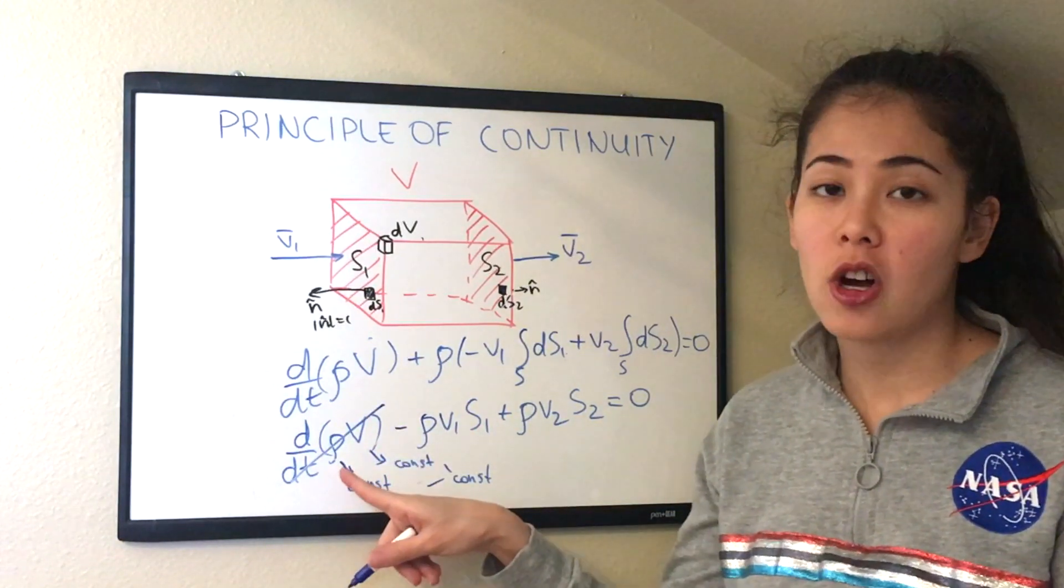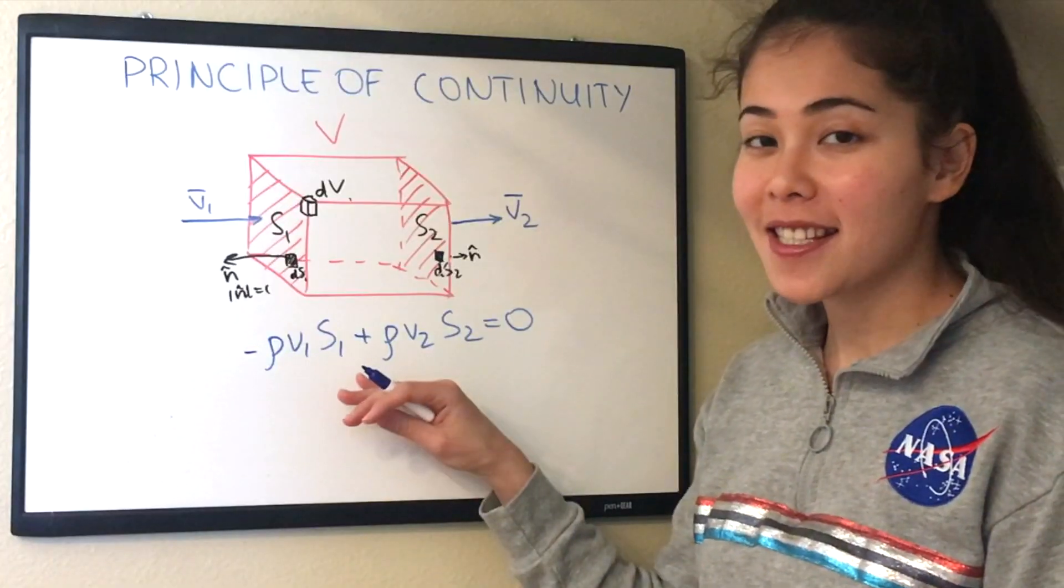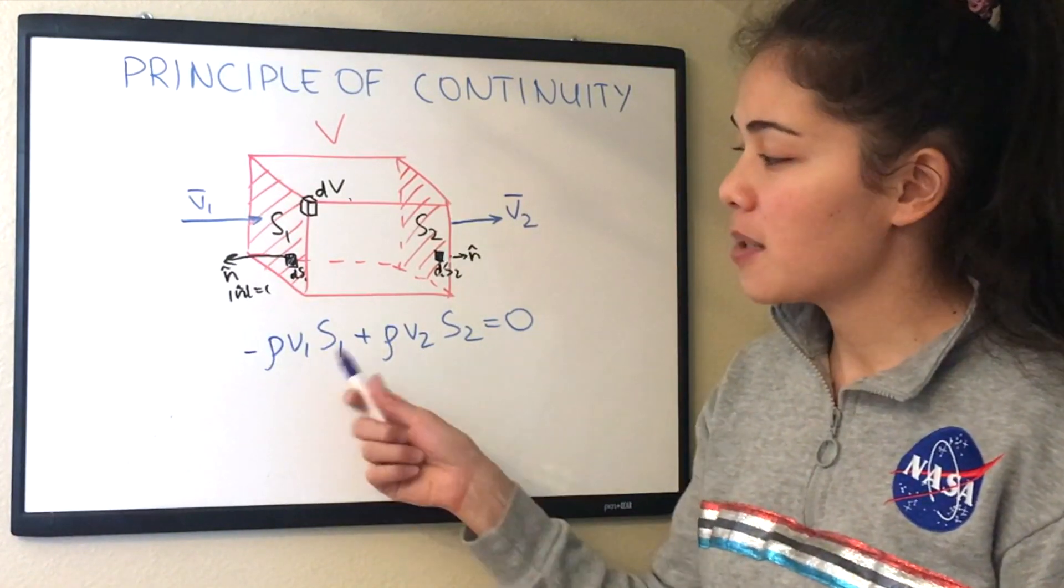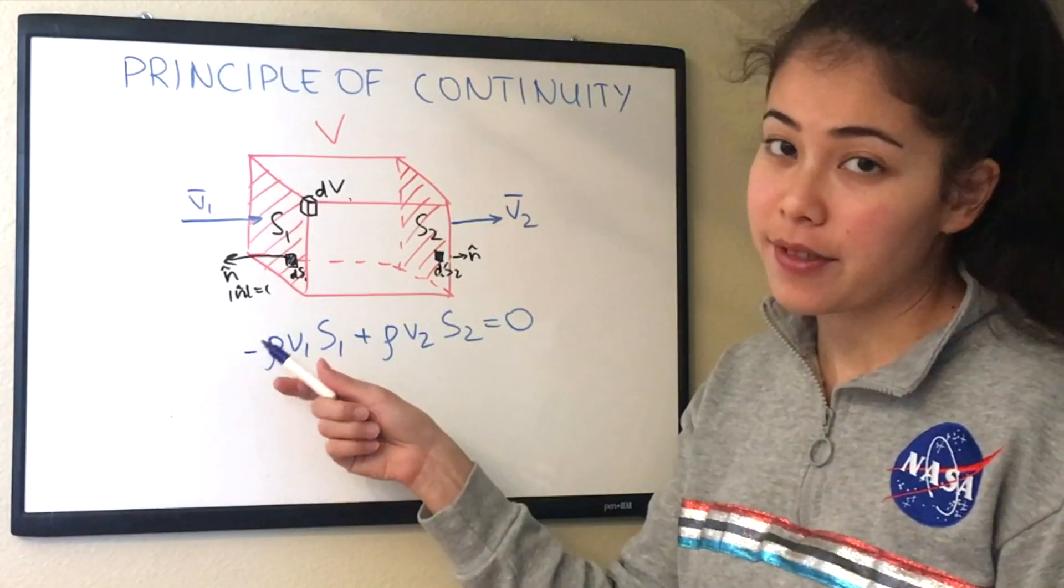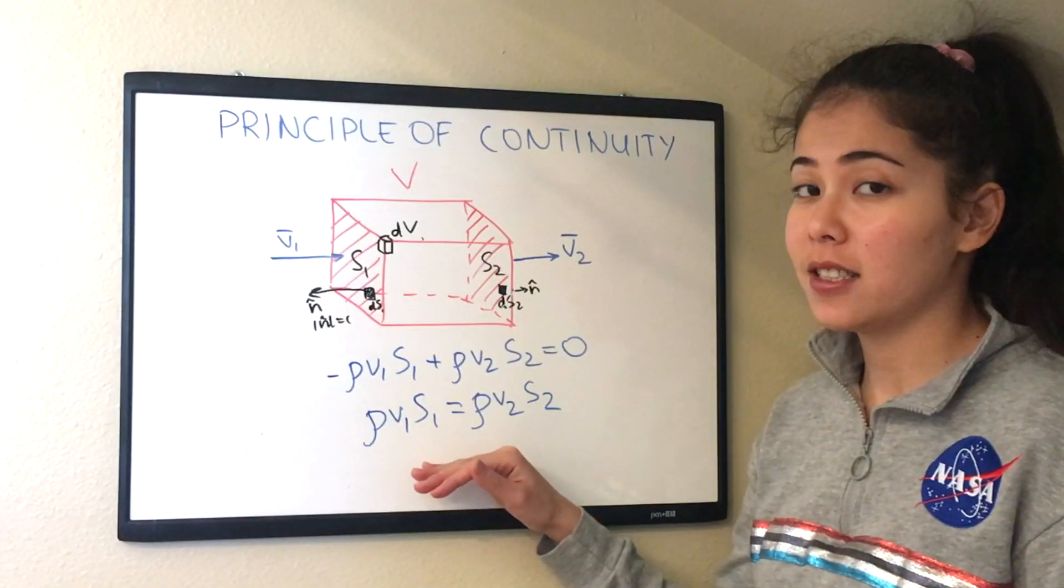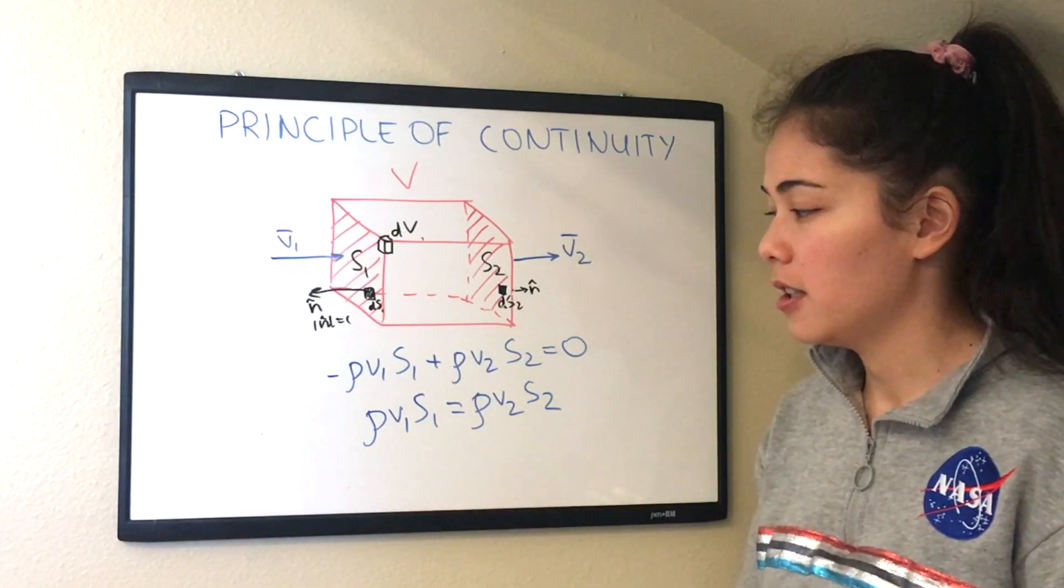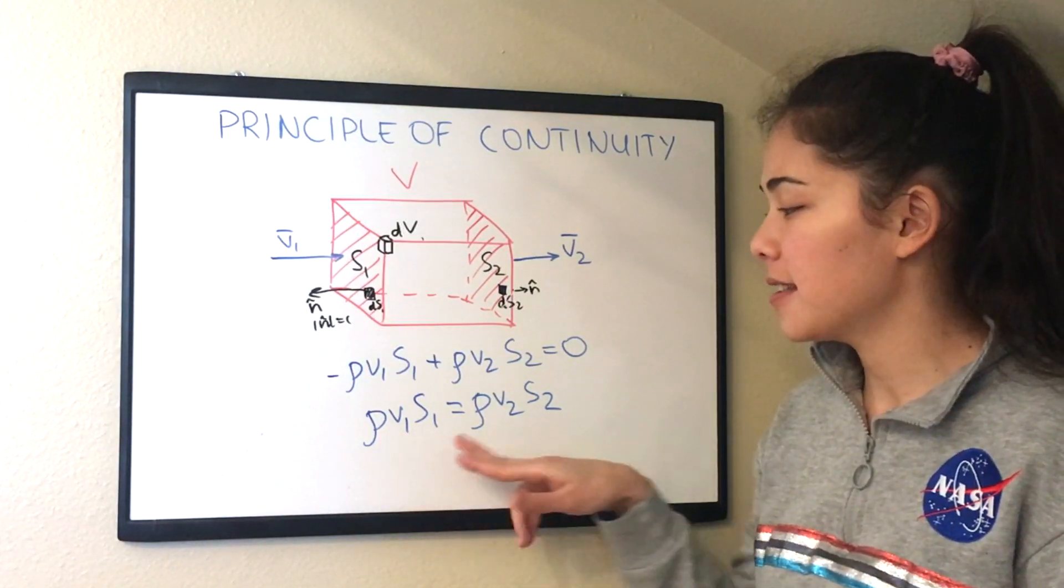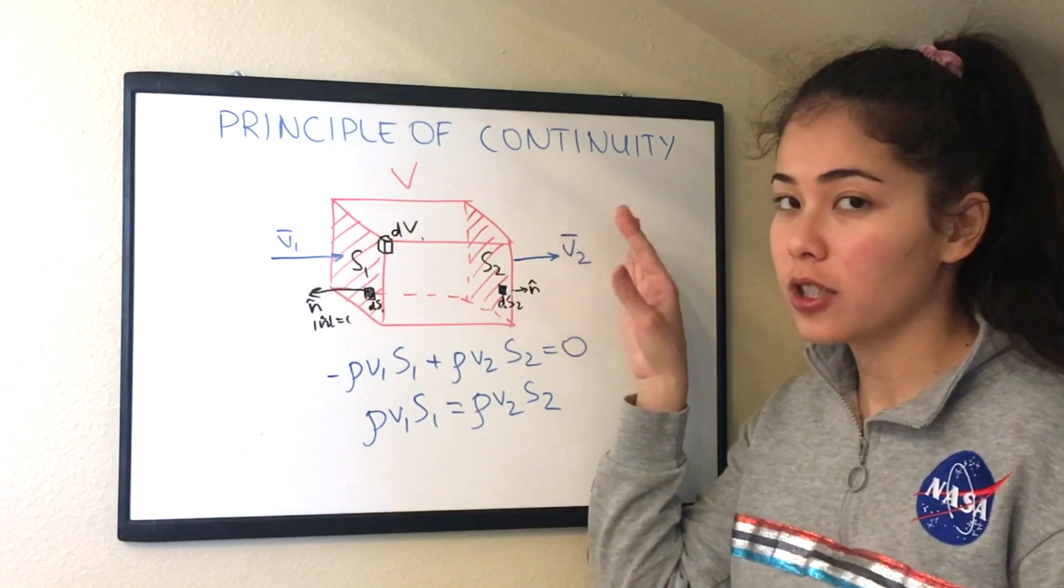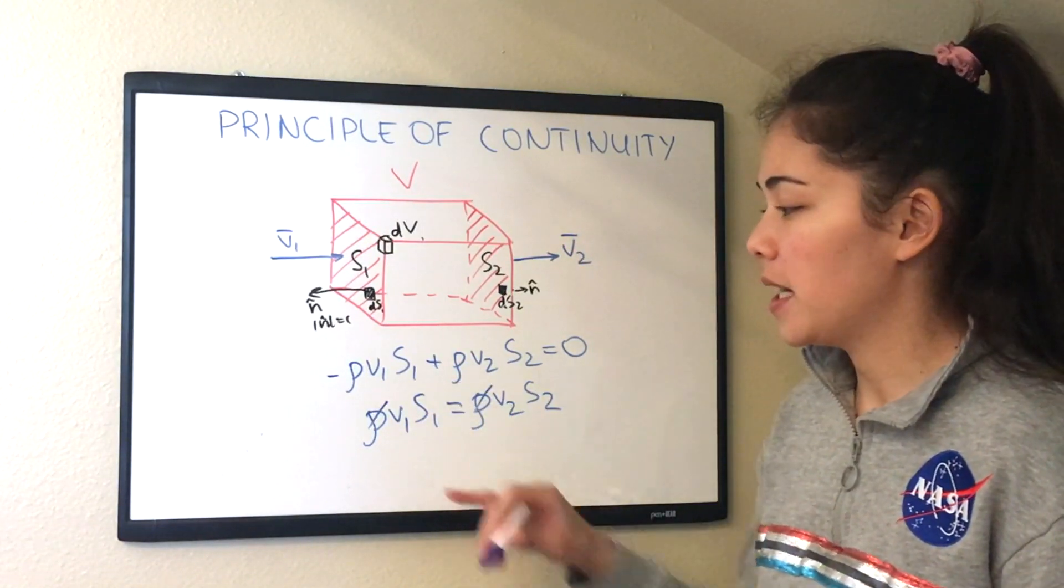So we can cross off the whole thing and simplify our expression even further. So this is our very simple expression. And we can simplify it even further to get rid of this negative sign. So this is our final expression. Now let's think about each term in this expression. Well, we assumed that density was constant and it's the same air going through the control volume or through the box. So we can divide by density.